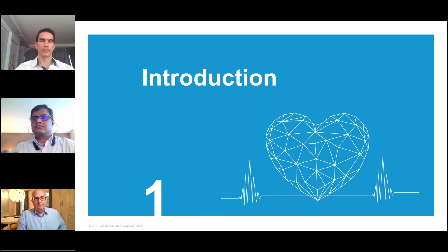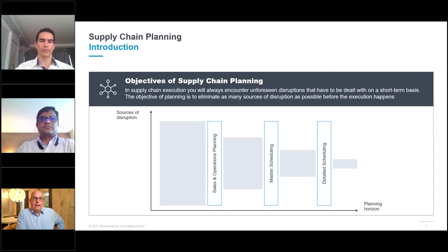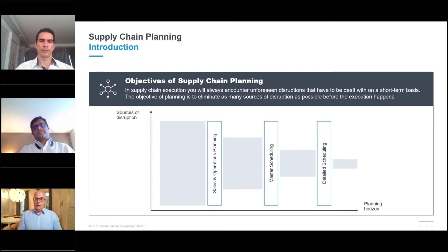Going into the introduction: the supply chain is at the heart of every company. Without it, we can't deliver goods to customers. The objective of supply chain planning is to ensure that, as you move closer to execution, you're not dealing with last-minute scrambles — needing to put on a separate shift or negotiating 20% more material with a vendor.